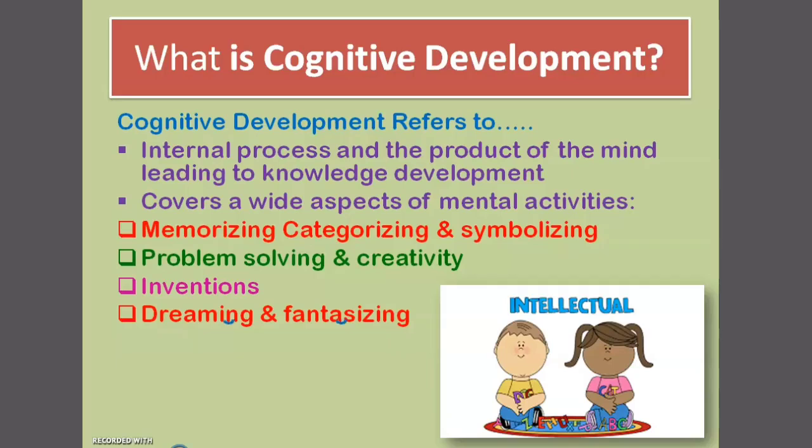Next is reading and writing. Reading and writing are also cognitive development processes. It is proved that cognition and language have a relation — that means without language, cognitive development will not happen.